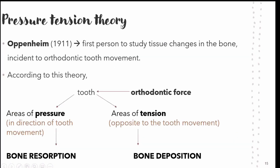Beginning with the pressure-tension theory: in the year 1911, Oppenheim was the first person to study tissue changes in the bone relating to orthodontic tooth movement. According to this theory, when orthodontic force is applied to the tooth, two areas can be seen — the area of pressure and the area of tension. Areas of pressure are seen in the direction of tooth movement where, because of the pressure applied, there is disorganization of the periodontal ligament and stimulation of fiber production.